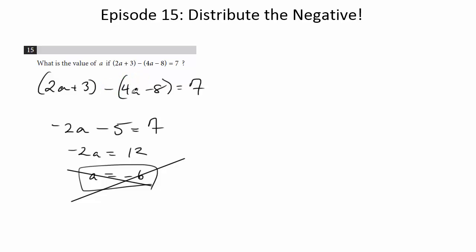So you're going to subtract 4a from 2a, but then you're going to subtract negative 8 from 3, not positive 8. It's not 3 minus 8, it's 3 minus negative 8. So the thing to remember here is whenever you're subtracting a quantity, think of it as distributing the negative. So really this is 2a plus 3 minus 4a minus negative 8, so it's going to be plus 8 equals 7.